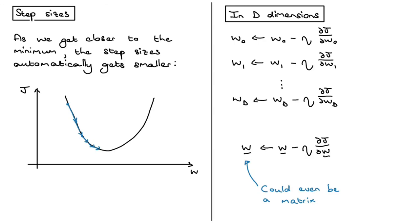Gradient descent is very often used in practice. You need to gain some experience on how to set the learning rate, for example. What I've described here is basically the basic gradient descent algorithm. There are far more advanced algorithms where, for example, you would set the learning rate differently for each of the different parameters, because in some cases it makes sense to have a different rate of update for different parameters.